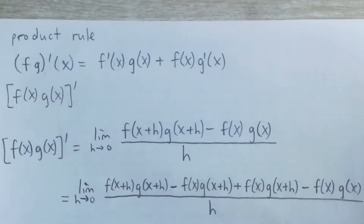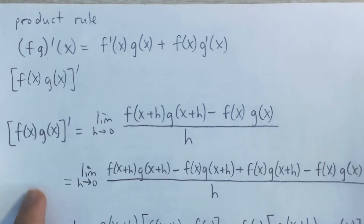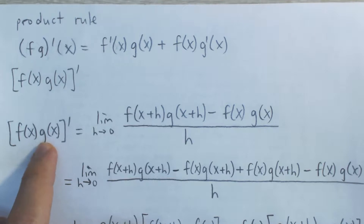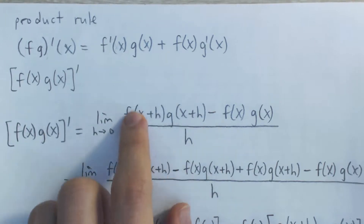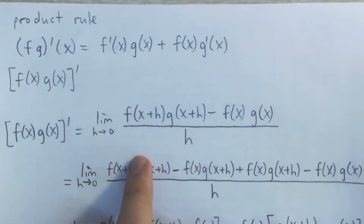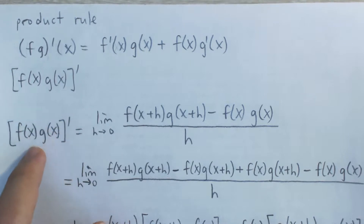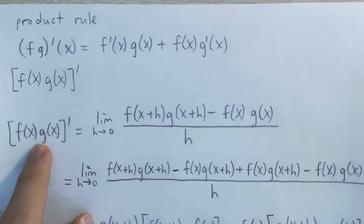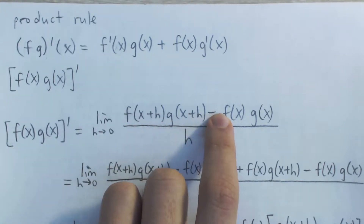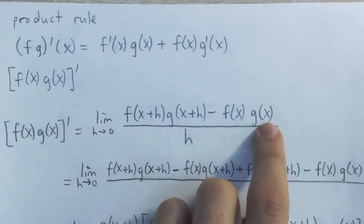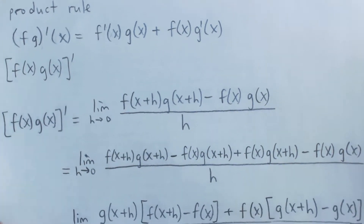We're going to prove this using the limit definition for derivatives. By the limit definition, the derivative of the product of these two functions is equal to the limit as h approaches 0 of the function evaluated at x plus h. Since f times g is our function, wherever you see x, you plug in x plus h, so it's f of x plus h times g of x plus h, minus the regular function f of x times g of x, all over h.